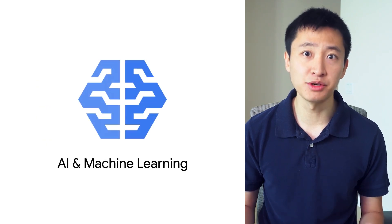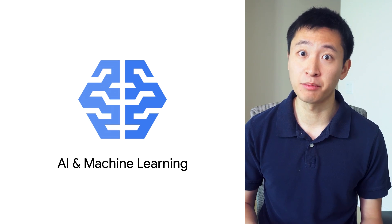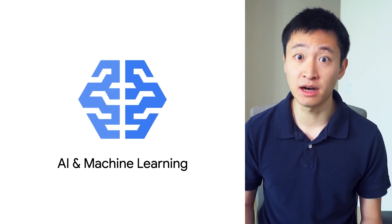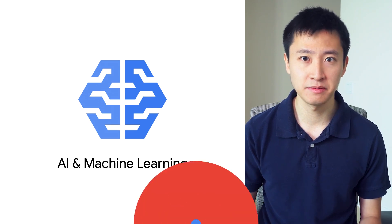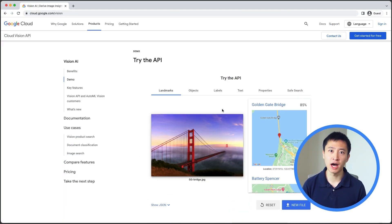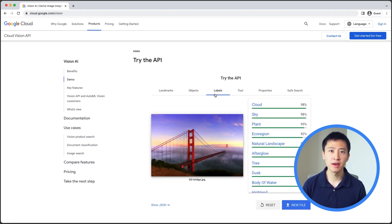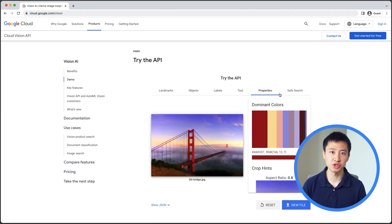Then there are AI and machine learning tools, which can be helpful if you are an experienced machine learning developer, but also if you know zero machine learning, but still want to take advantage of Google's AI technologies for your own applications. Suppose you have lots of images in your application and you want to enhance your application by knowing what's in each image. Vision AI provides an API that will take an image and run object detection, find landmarks, extract text, and more, allowing your users to use that information in your app.